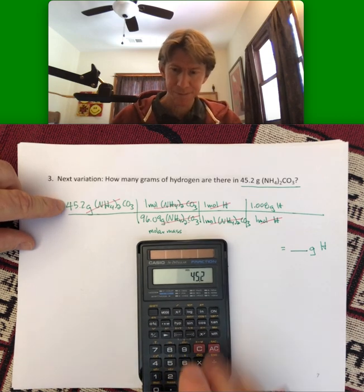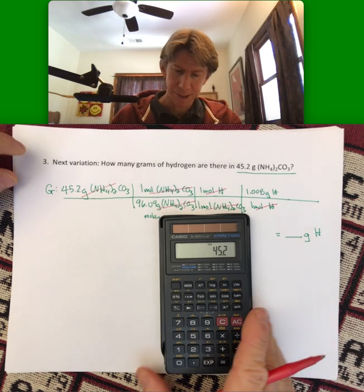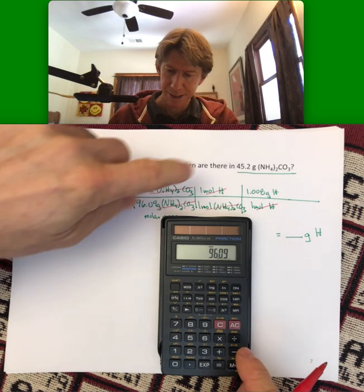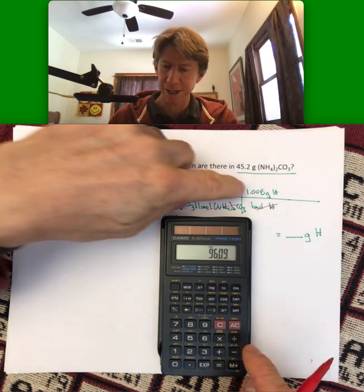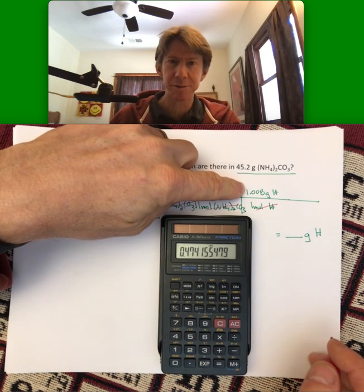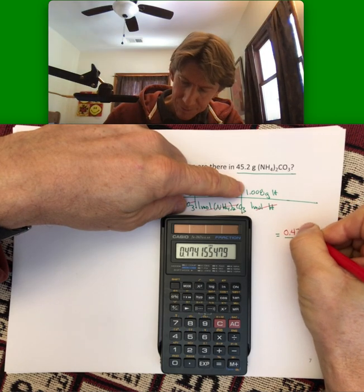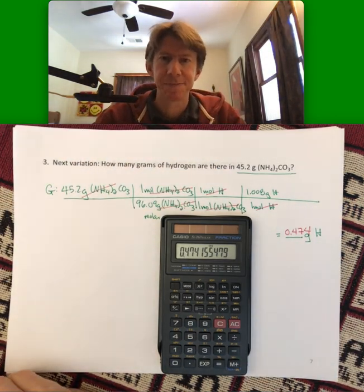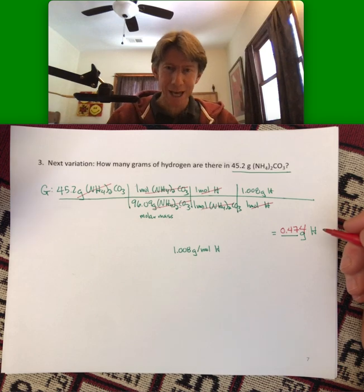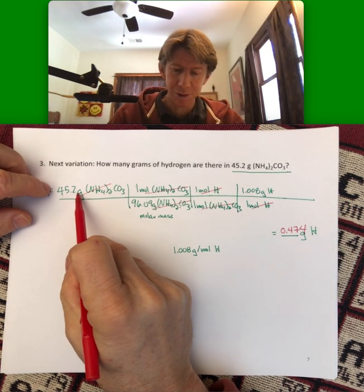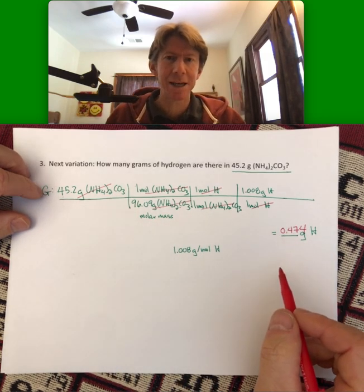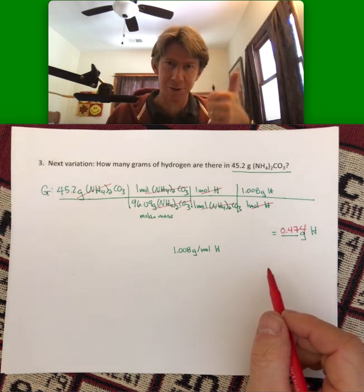Divided by 96.09. Times 1 divided by 1. We don't need to do that. Times 1.008. I get 0.474 grams of hydrogen, which hopefully kind of, I mean, in general it makes sense. I don't know if the exact number makes sense, but of 45.2 grams, I certainly have to have, since hydrogen is only a part of this molecule, has to be a number less than 45.2. So thumbs up on that. Hydrogen is pretty light. Wait a minute.